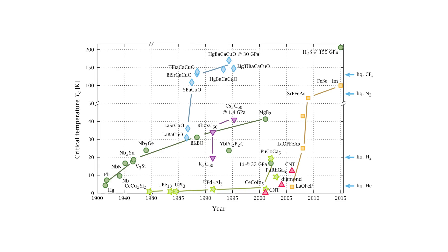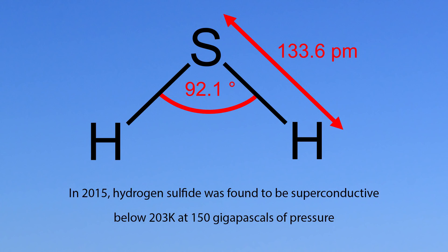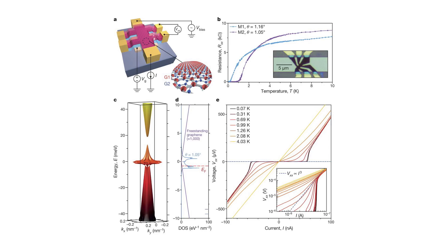In 2015, hydrogen sulfide was found to be superconducting at a temperature below 203 Kelvin, under immense pressure, 150 gigapascals. In 2018, researchers at MIT discovered that bilayer graphene could be made superconductive when twisted 1.1 degrees.